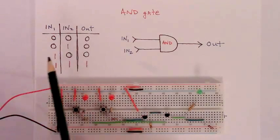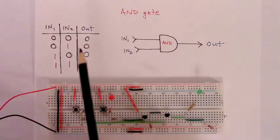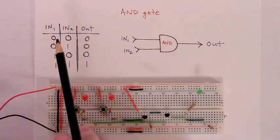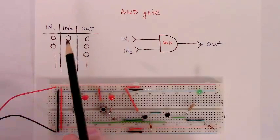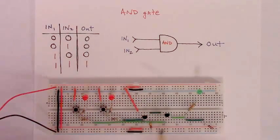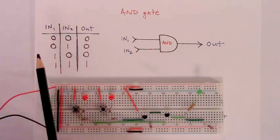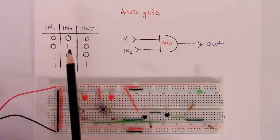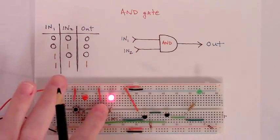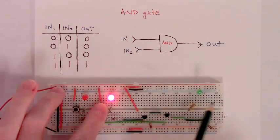Recall that the input-output table, or truth table, associated with an AND gate reads as follows. Whenever input one is low or zero, and input two is low or zero, the output should also be zero. That's the state this circuit is currently in — input one is low, input two is low, and the output is low. We can look at the second row where input one is low, input two is high, and the truth table indicates the output should be low, and it is.